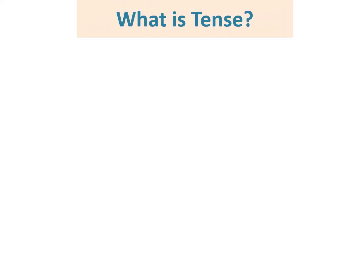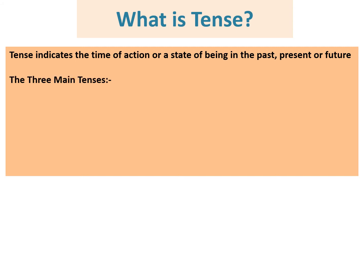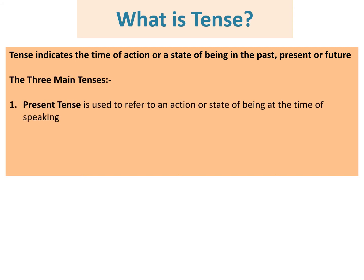What is tense? Tense indicates the time of action or a state of being in the past, present, or future. There are three types of tenses: present tense, past tense, and future tense.